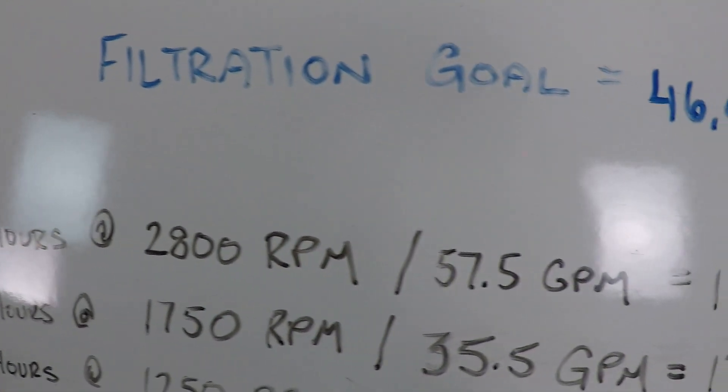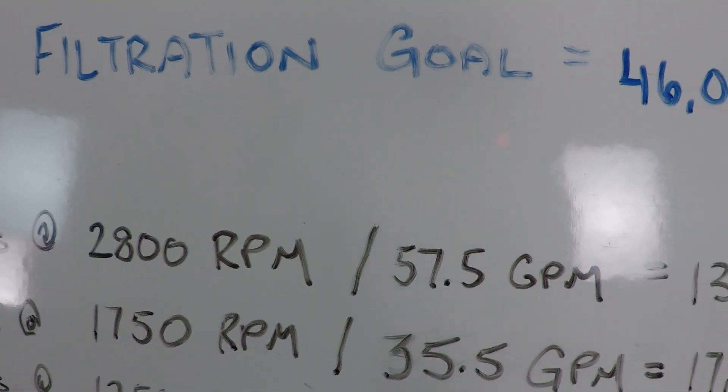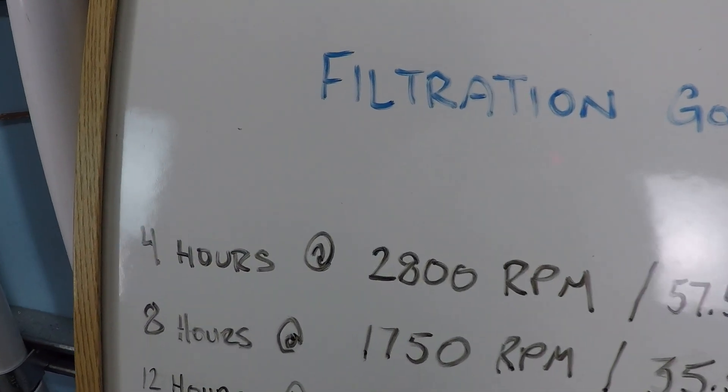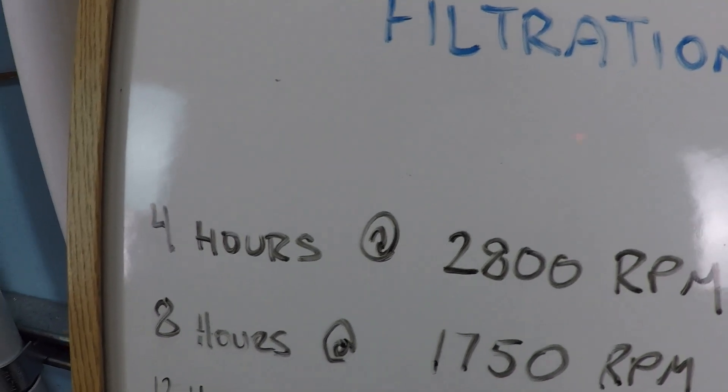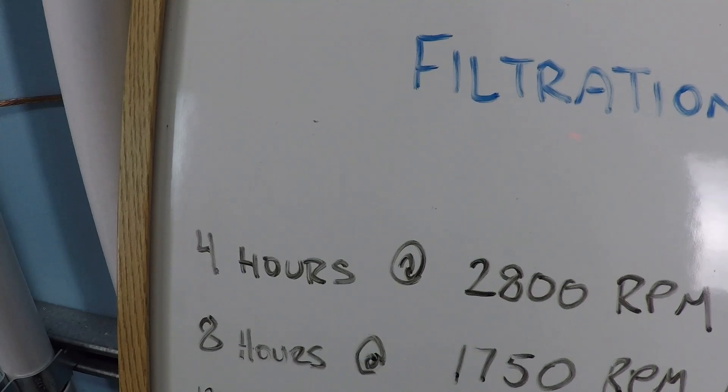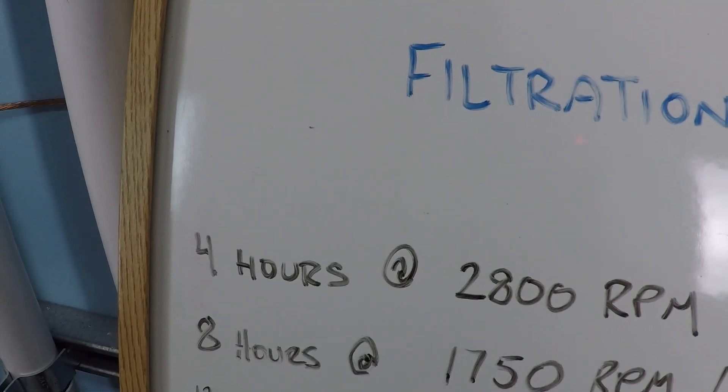And the amount of flow rate that we're going to get at 57 and a half is still pretty good. Like it's probably only maybe 70 or 71 at 3450 on this system. So we only lost a little bit of the flow rate, but we're saving a lot of power by doing this.